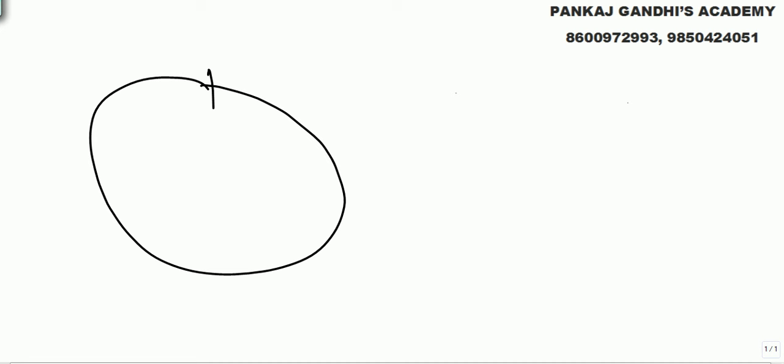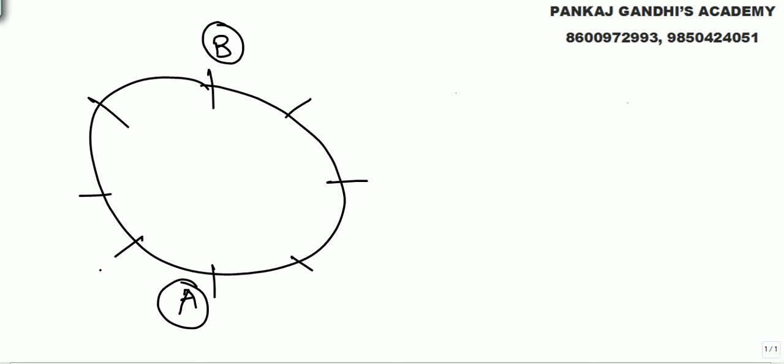We are starting with circular table — the tougher questions. Jab tak direction nahi milta hai, chalu nahi karne ka. Thoda tough questions we are doing. Apne poora question padh liya hai but koi bhi direction nahi mil raha hai, so we start. Ajay and Bipen are sitting opposite to each other. Let's say yeh Ajay hai aur yeh Bipen hai. Eight persons are there in all, aur abhi Ajay aur Bipen opposite to each other diya hai.